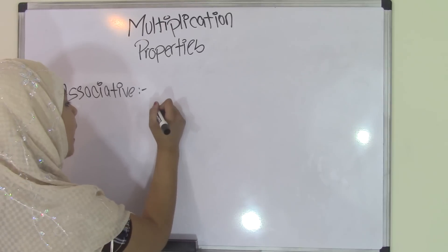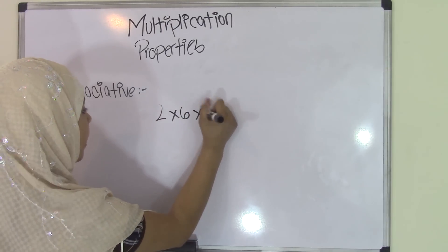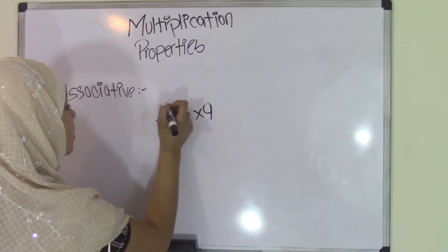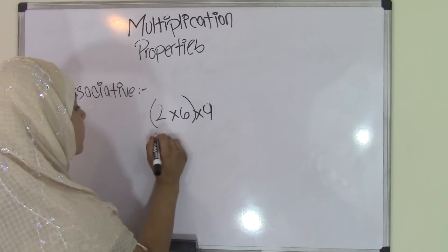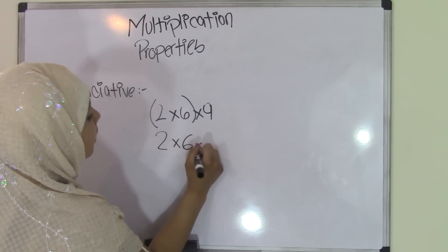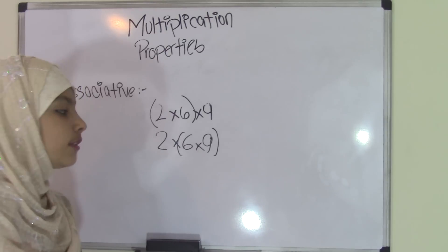So for example, if we have 2 times 6 times 9, and 2 and 6 are in parentheses, you can also write this as 2 times 6 times 9, and then put 6 and 9 in parentheses. Either way, you'll still get the same product.